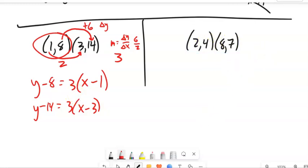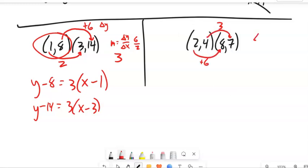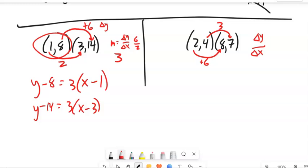And if I were to do it again with this one, I need to know the slope first. So this goes up 3. This goes over 6. So my slope would be change in y over change in x. So 3 over 6, which is 1 half.